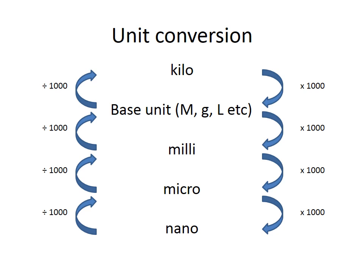Starting at the top with a kilo unit: one kilo unit equals one thousand base units, so to go from kilo to the base unit you multiply by one thousand — for example, one kilogram equals one thousand grams. To move from the base unit to a milli-unit, again you multiply by one thousand, so one gram equals one thousand milligrams. Each step down multiplies by one thousand: a milli-unit is one thousand micro-units, and one micro-unit is one thousand nano-units. To move the other way, you simply divide by one thousand.